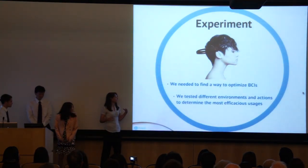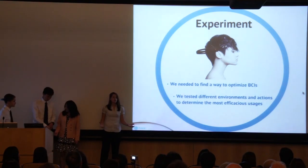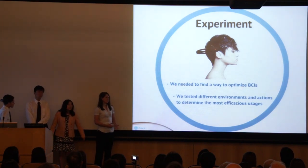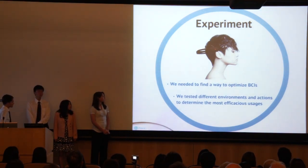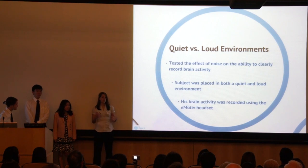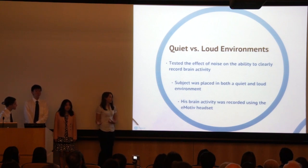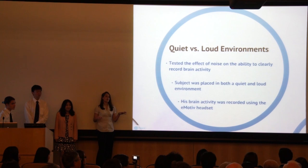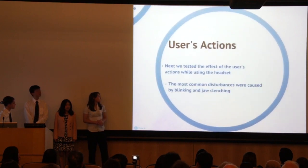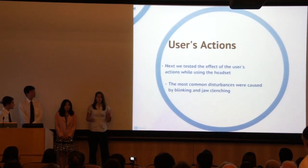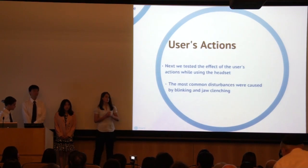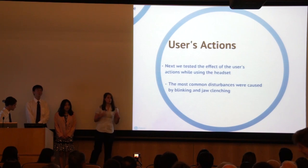For our experiment, we first needed to find a way to optimize the usage of the BCI. We tested different environments that could possibly affect the clarity of the signal, and also different actions that the user could do while using the headset. We put the test subject in both a loud environment and a quiet environment while he was wearing the headset, and he was told to keep his thought pattern neutral while we recorded his brainwaves. We found that the two most common disturbances in the signal were caused by blinking and jaw clenching.